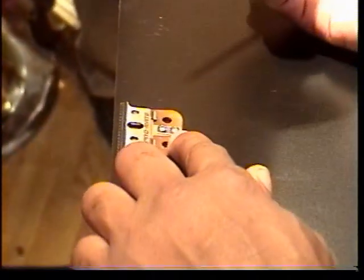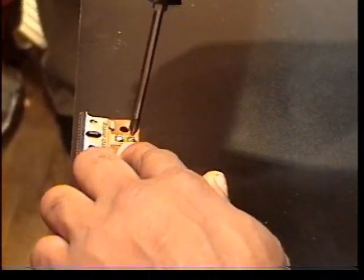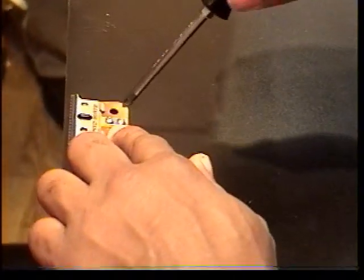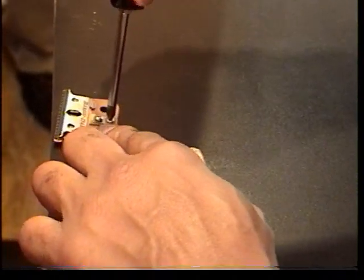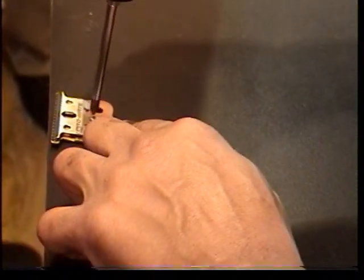The reason we made a quarter turn is so it doesn't over-tighten. So what you do is take the screw and tighten it up. See, it only takes a quarter turn and tighten it up.